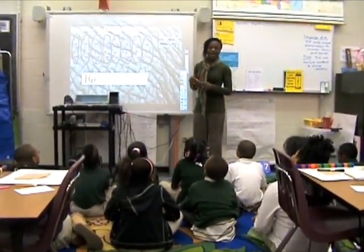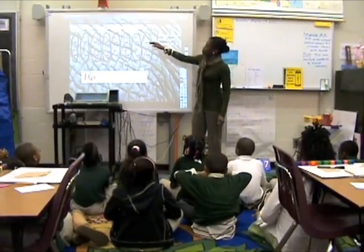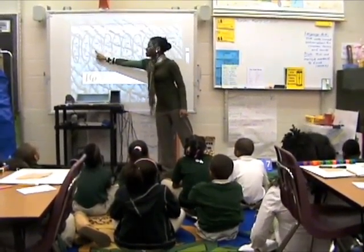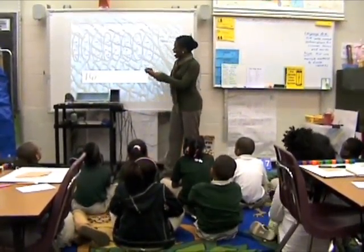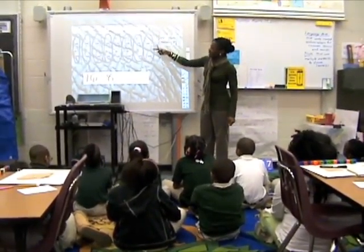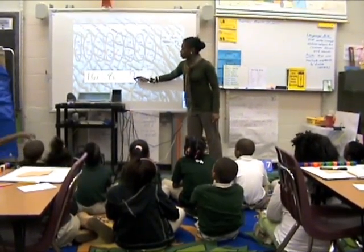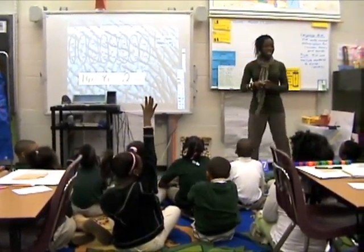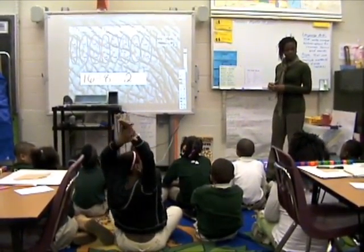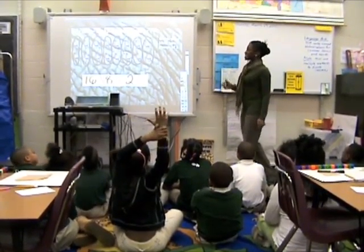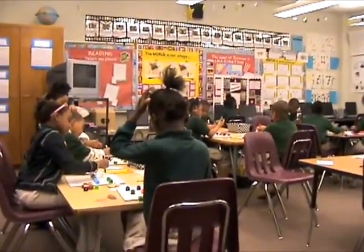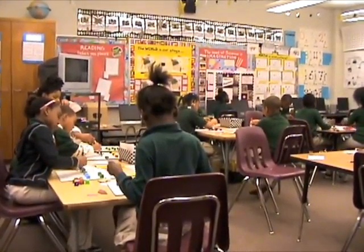We put here the number of groups we have, which is one, two, three, four, five, six, seven, eight — I have eight groups. And in each group, I have two birds. Muhammad, could you please read what our division sentence says? Sixteen divided by eight equals two. Use your marker to divide into groups of two.